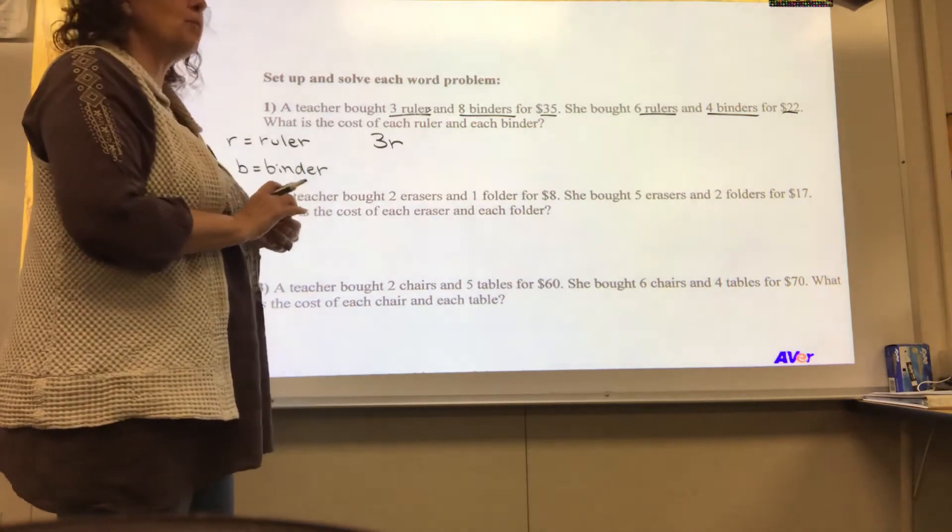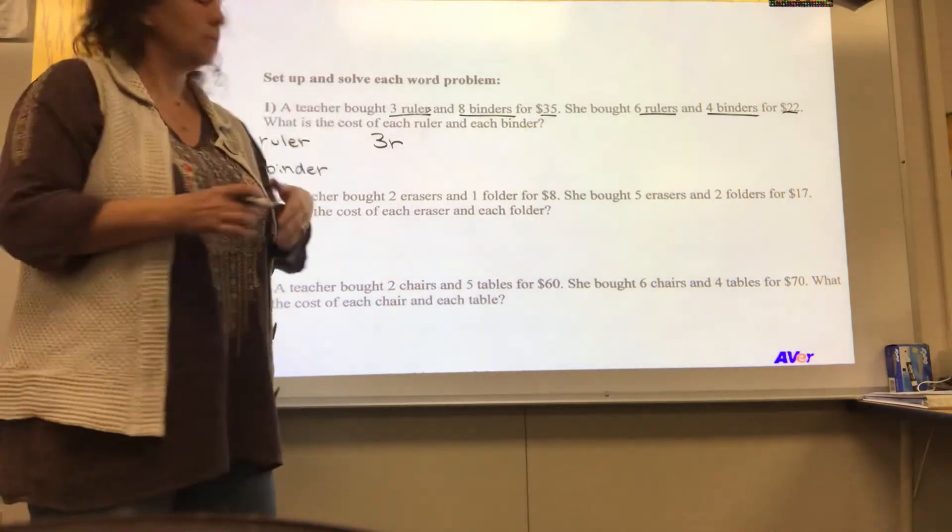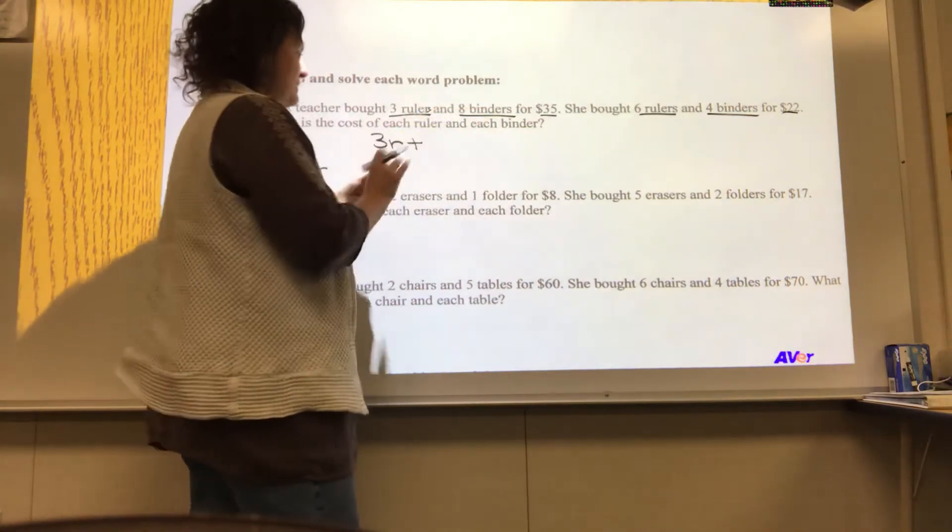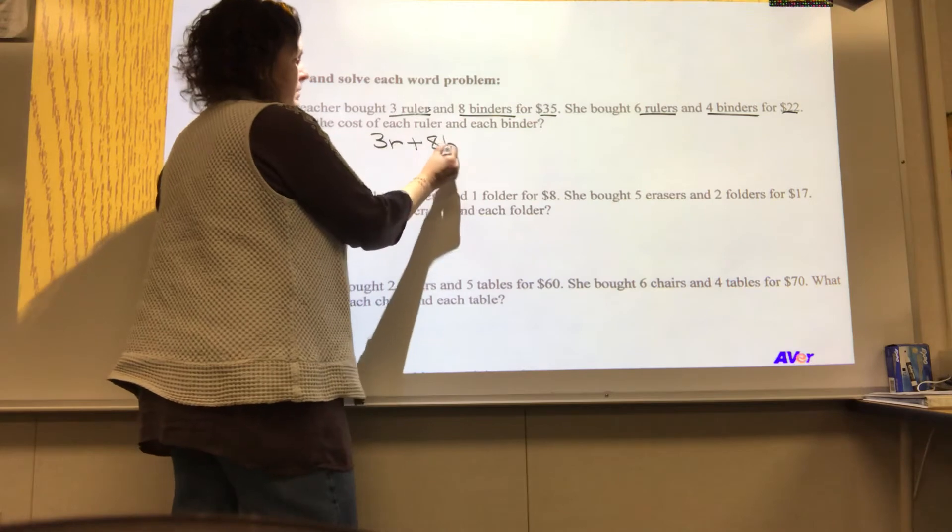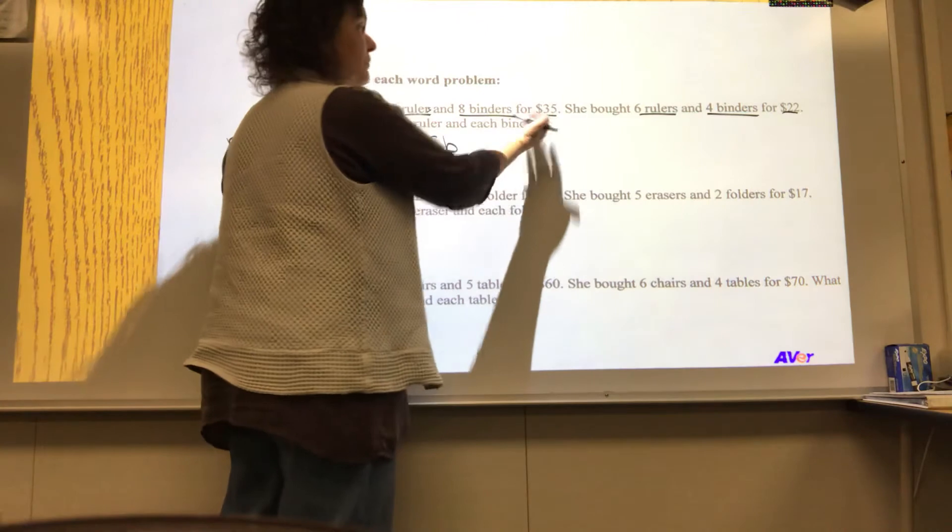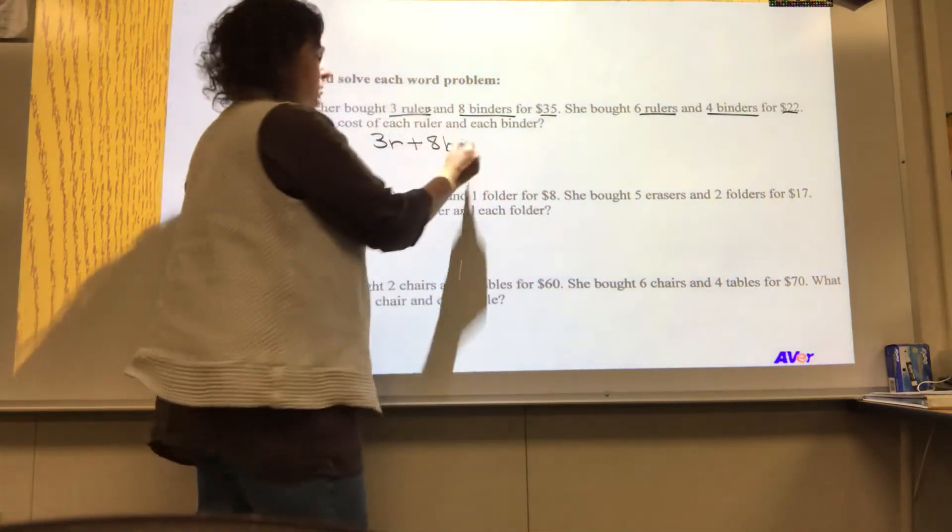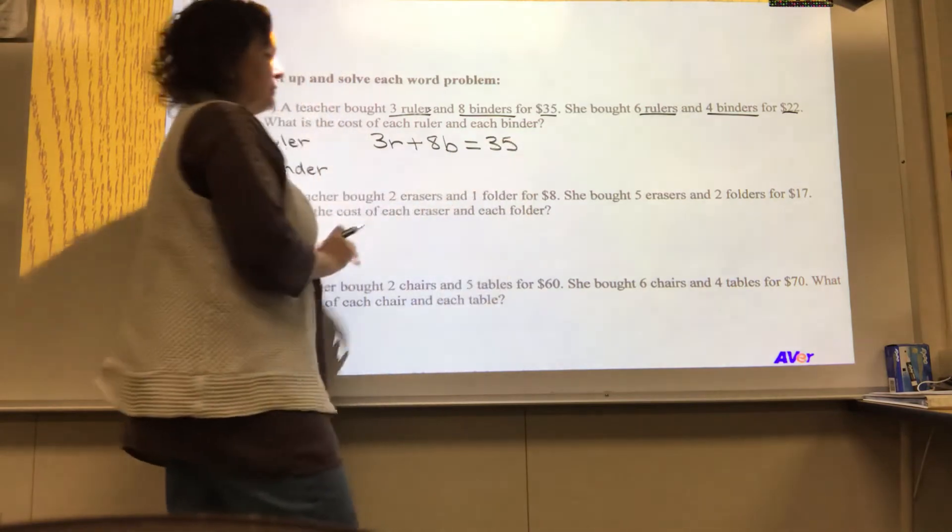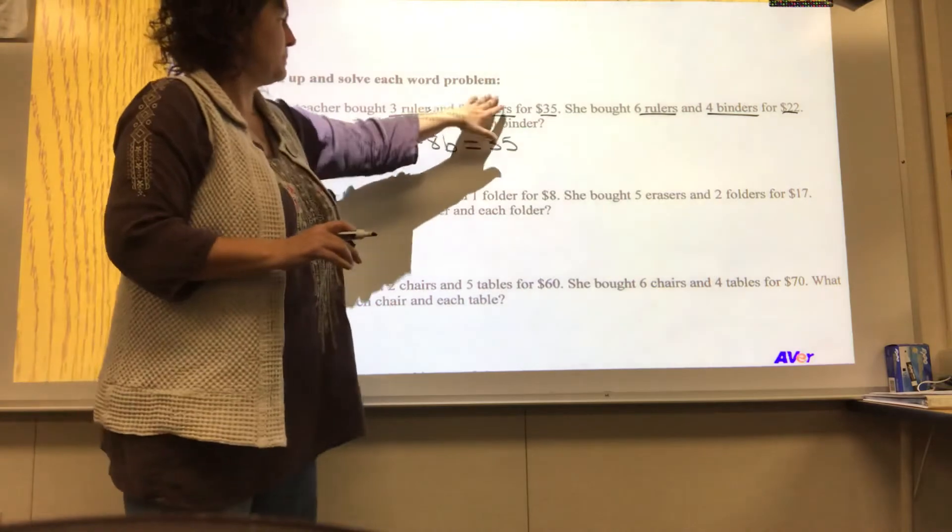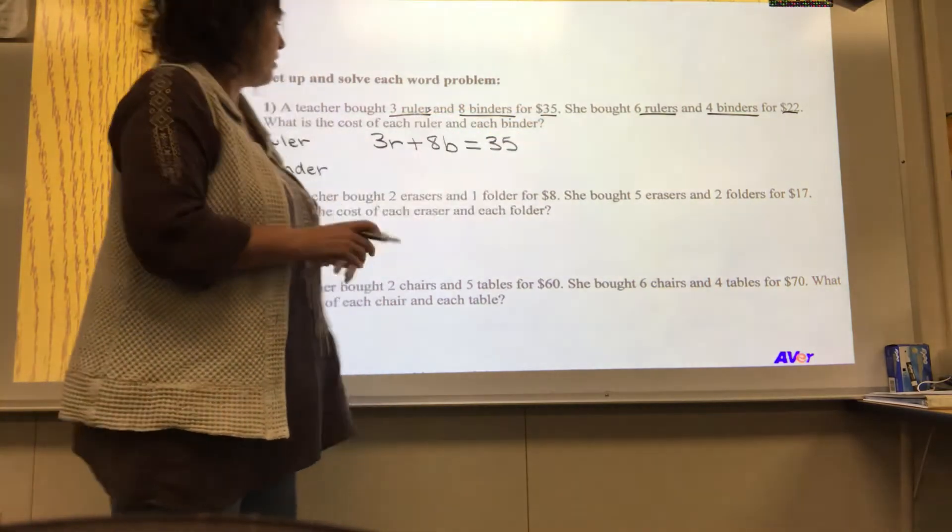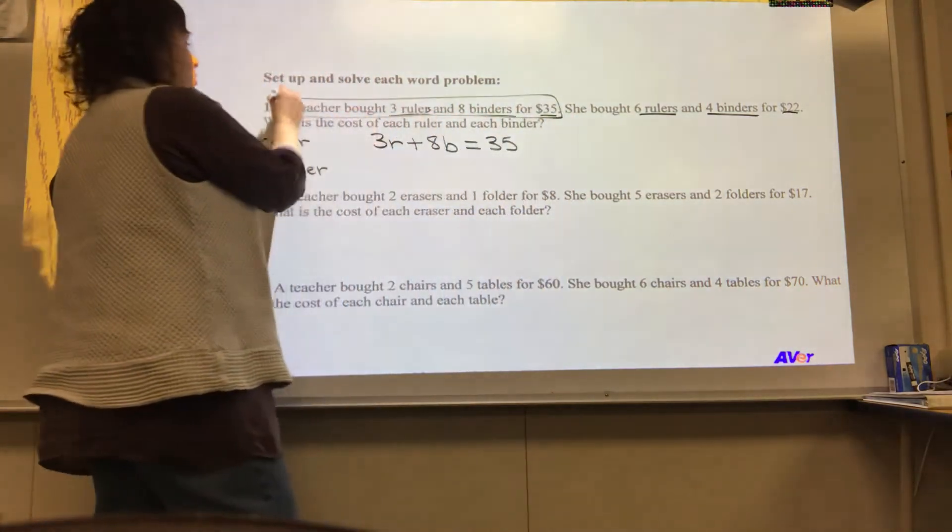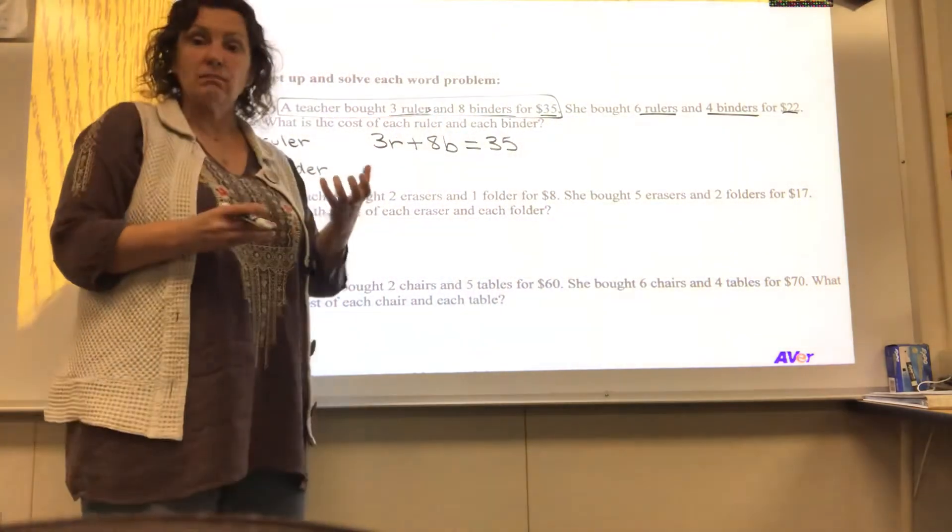Three R. And what would and be indicative of in mathematics? I'm going to go with plus. Eight binders. Eight B's. Okay, so she bought three rulers, eight binders, for a total of $35. For a total? What would be that equal? $35. Okay, let's read it, make sure that makes sense. Three R's and eight B's equals $35. Yeah, that totally makes sense. So this first sentence creates the first equation in our system. Cool.